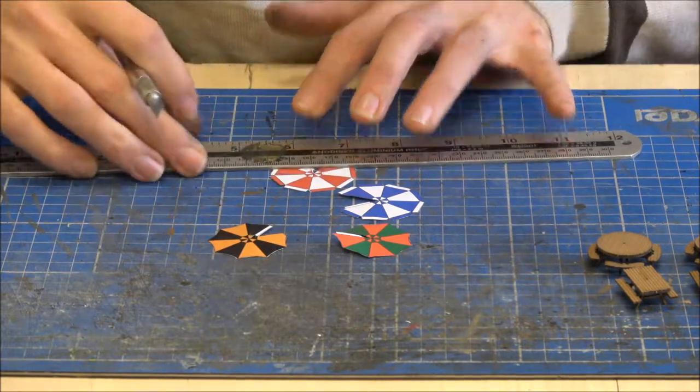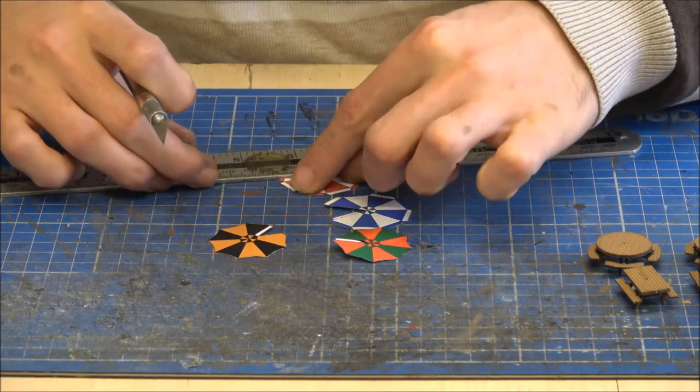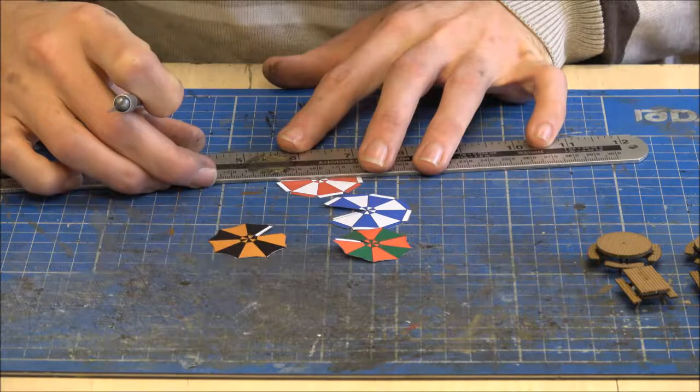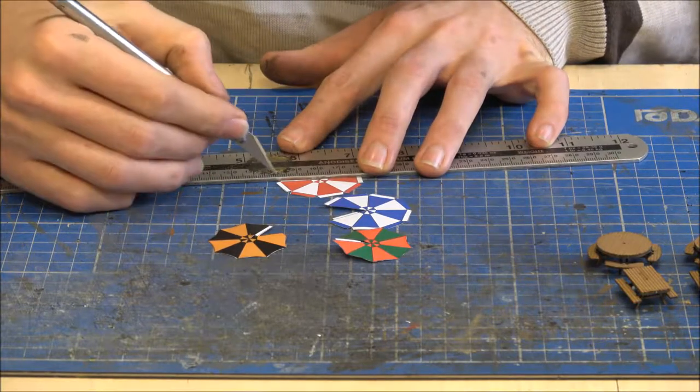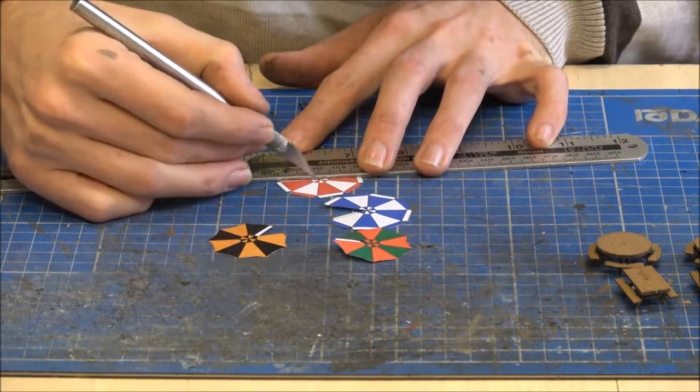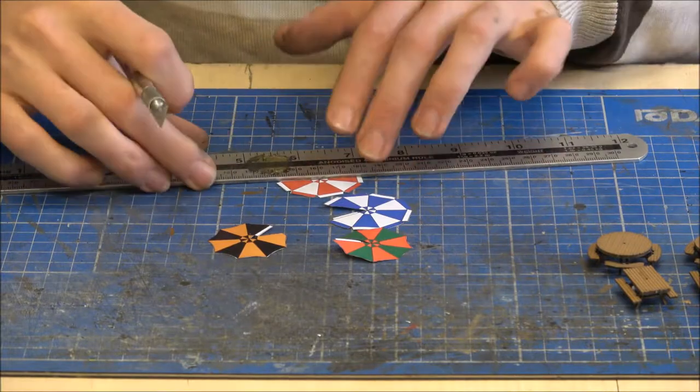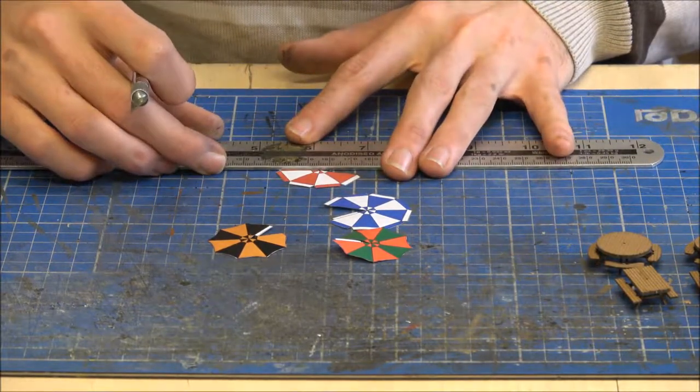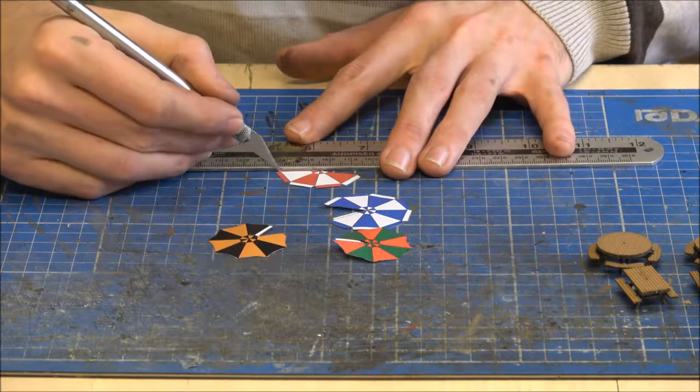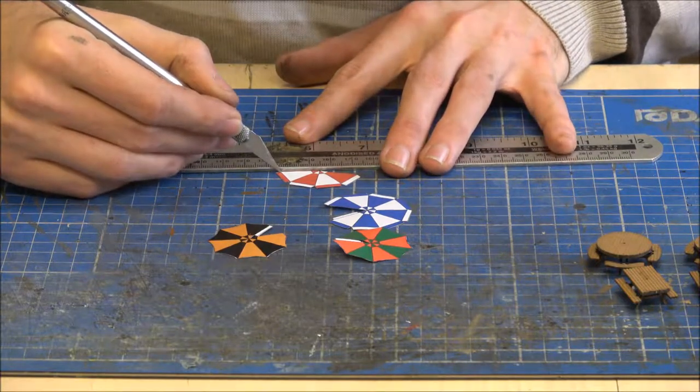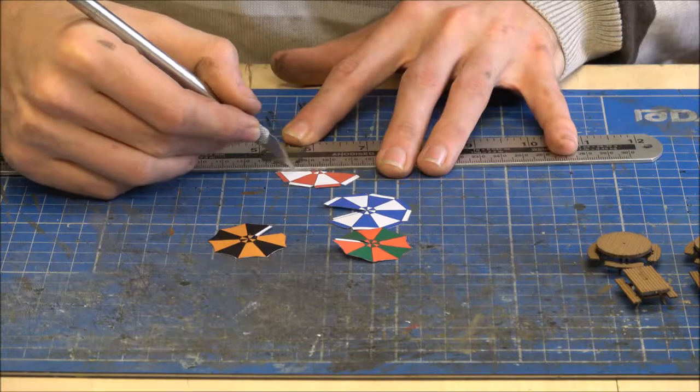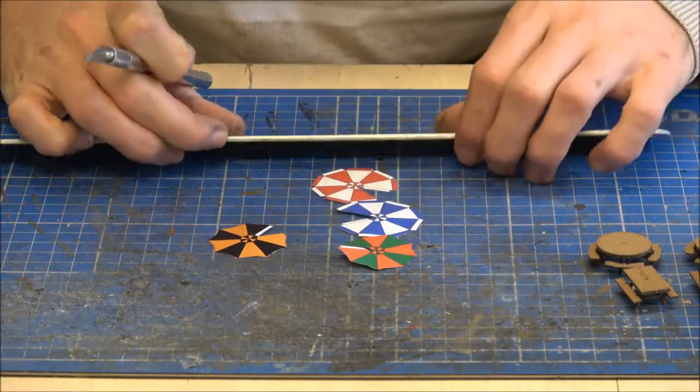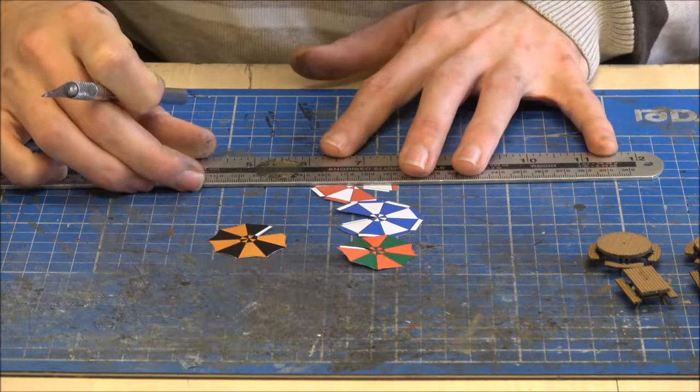Because this just allows the paper to fold a little bit better so that your umbrellas look a little bit more realistic, rather than a round cone shape. You're actually going to get something that does actually resemble quite happily a very good umbrella. So I'll just carry on with these.